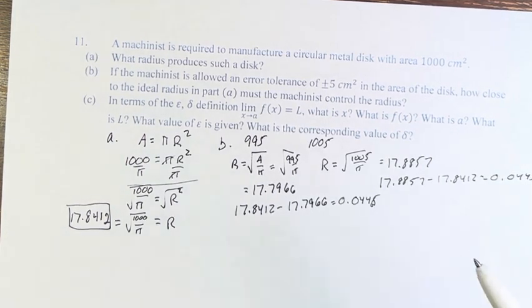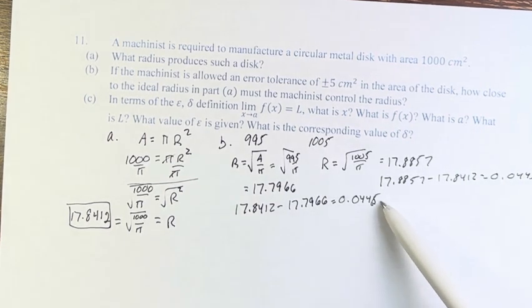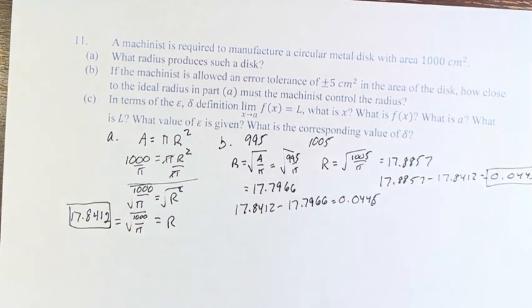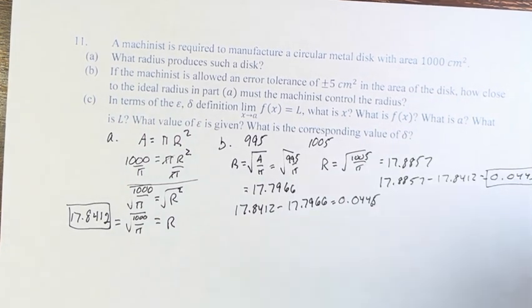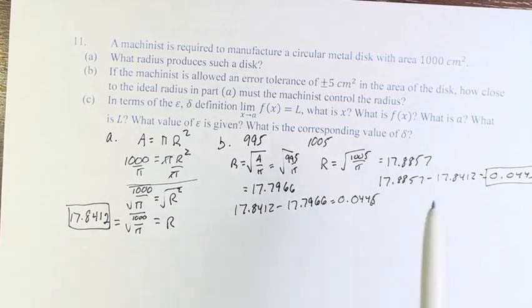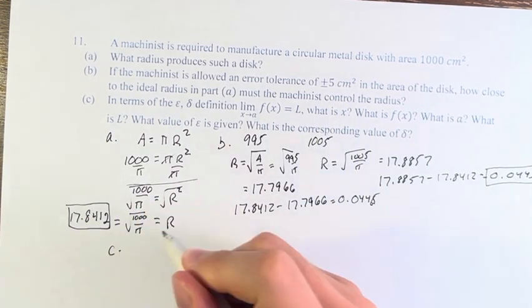So, how close to the ideal radius must the machinist control the radius? Well, it's either 0.446 or 0.445. And we have to go with the more restrictive option, the smaller value. Because if you go 0.446 in this direction, you're going to get past the 5 centimeter restriction.